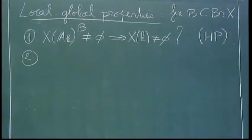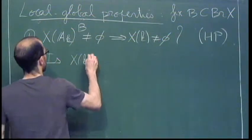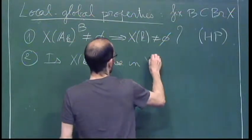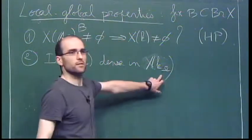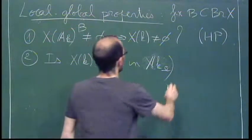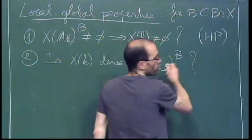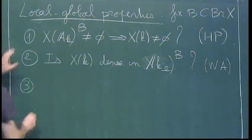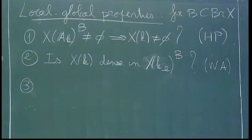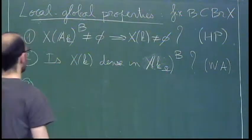The second property is weak approximation, which Olivier introduced in his talk: is x(k) dense in the Brauer-Manin set? Here B has to be a subgroup of the unramified part so that this makes sense. The question is whether the Brauer-Manin obstruction to weak approximation is the only one — I'll denote it by WA. These are the main questions; we saw a lot of conjectures about them, and many cases are still open. I will introduce two more, which are the same as the first two if x is proper, but here will be different — these are the integral versions.